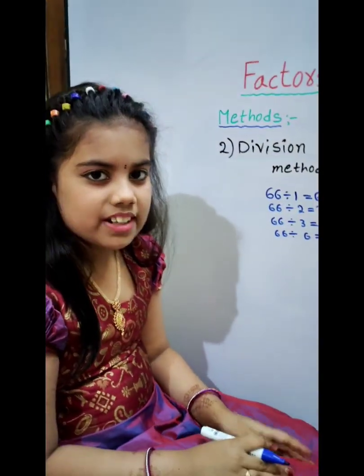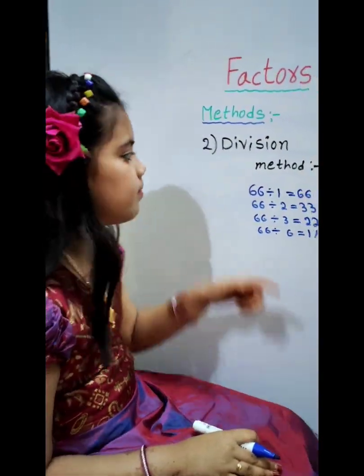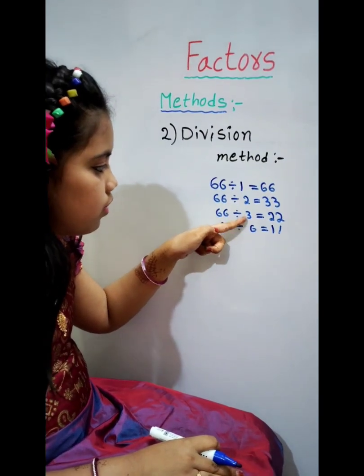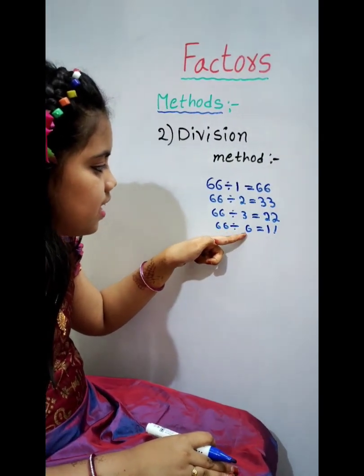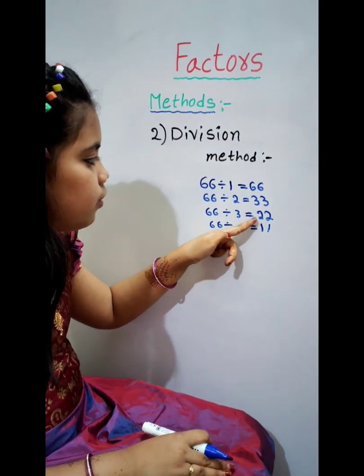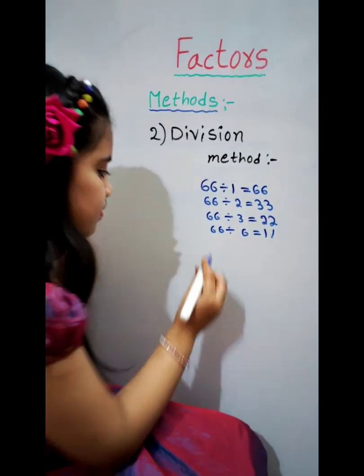The factors of 66 are 1, 2, 3, 6, 11, 22, 33 and 66.